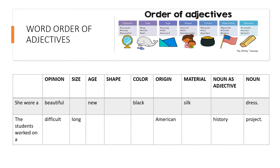Adjectives in English follow a certain order if there is more than one adjective in a sentence. The chart explains the order that these adjectives go in. An adjective that describes an opinion is always first. An adjective that is a noun acting as an adjective is always last. If adjectives are following a certain order, you do not need to use commas in your sentence. If you are using two adjectives that are describing the same quality or characteristic, such as opinion or size, you must use a comma.